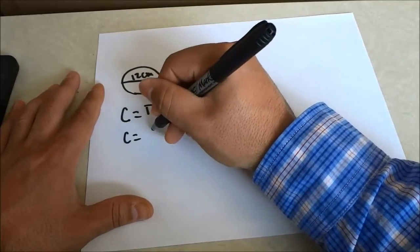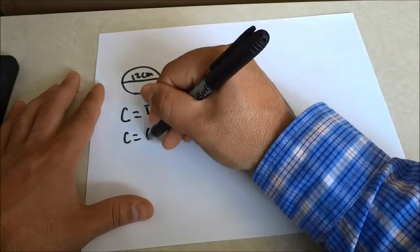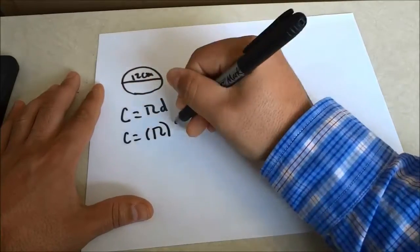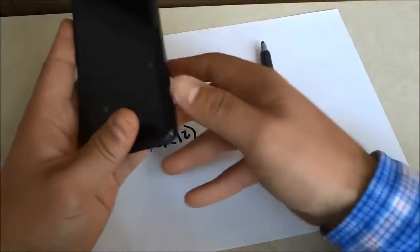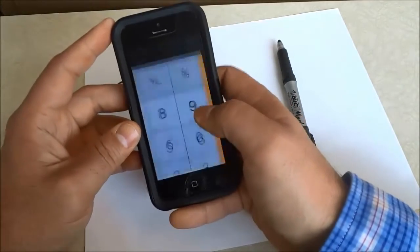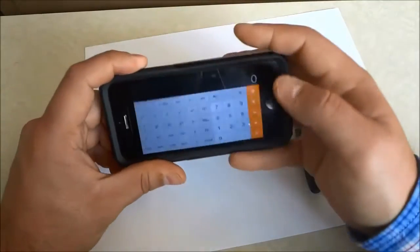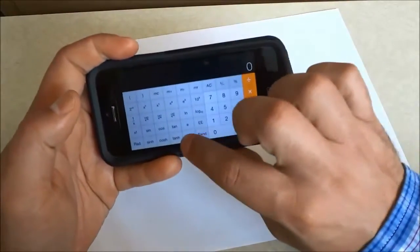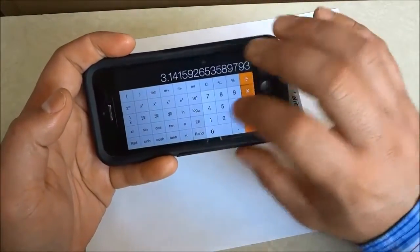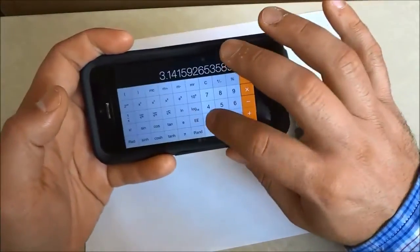So the circumference of the circle is equal to pi times 12 because 12 centimeters is the diameter. Now if I open my calculator right here and turn it sideways to get some more options, I can just simply do pi times diameter which is 12.